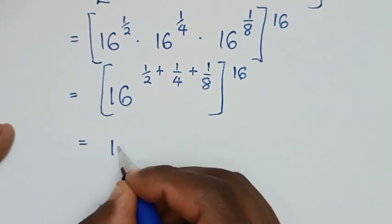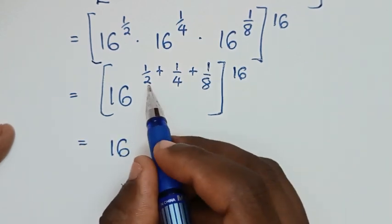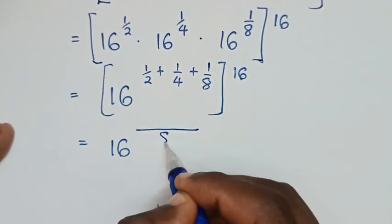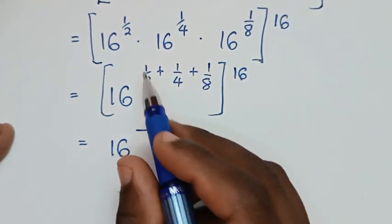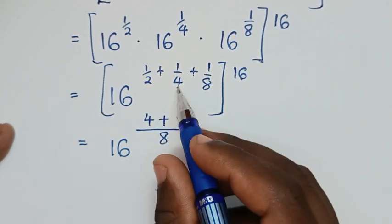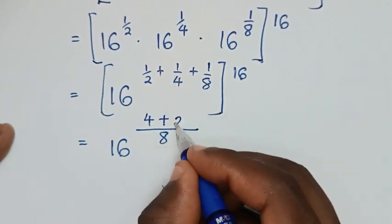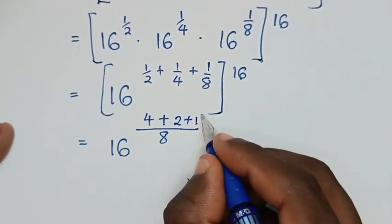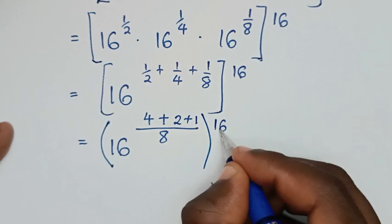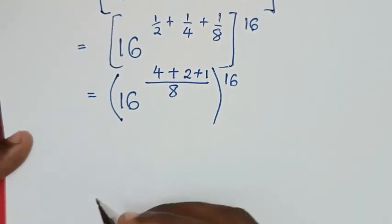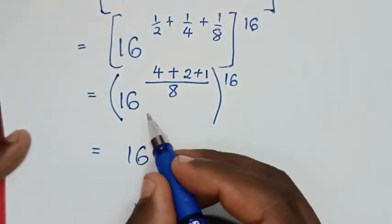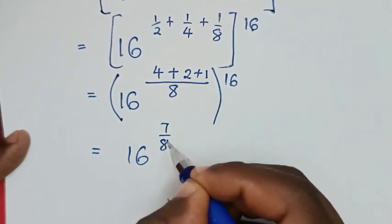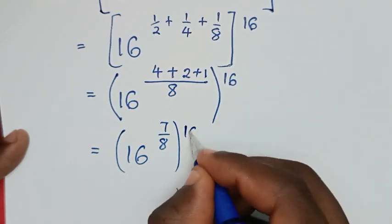Then it will be equal to 16 power of — the LCM of 2, 4, and 8 is 8. So it will be: 8 divided by 2 is 4, 4 times 1 is 4; plus 8 divided by 4 is 2, 2 times 1 is 2; plus 8 divided by 8 is 1, 1 times 1 is 1. Then bracket, this power of 16. So 4 plus 2 is 6, 6 plus 1 is 7, over 8. Then bracket, this power of 16.